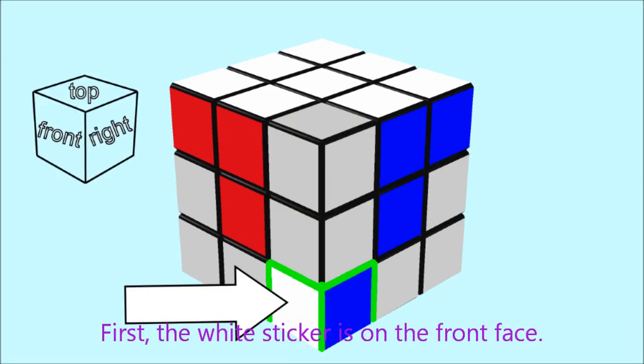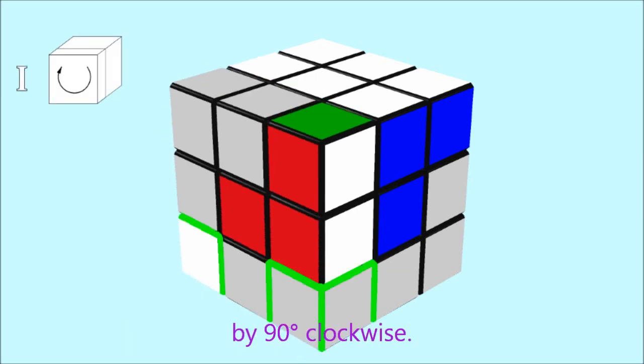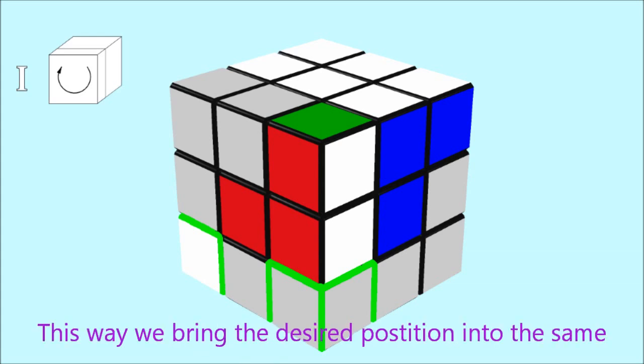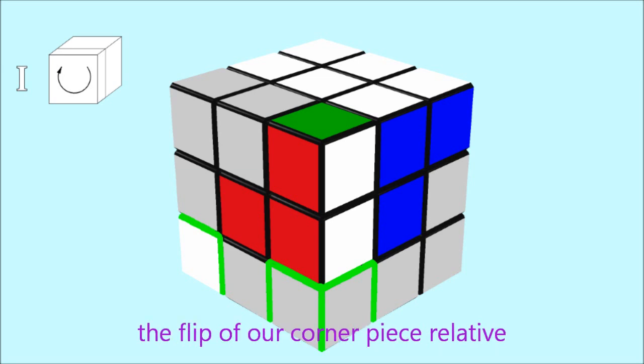First, the white sticker is on the front face. In this case, we have to rotate the front layer by 90 degrees clockwise. This way, we bring the desired position into the same plane of our corner piece and at the same time change the flip of our corner piece relative to the desired position.